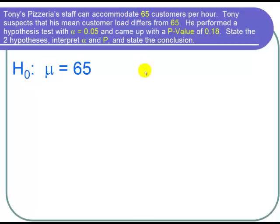Now for the alternative hypothesis, the key word here is differs from. So when you see differs, the inequality is not equal to. So our alternative hypothesis is that mu is not equal to 65.